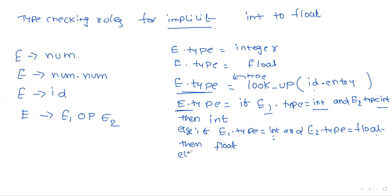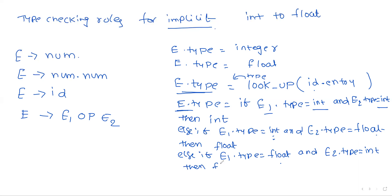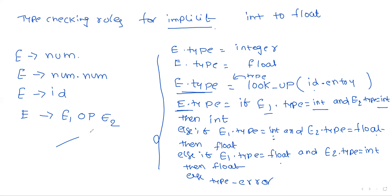Another case: if E1.type = float and E2.type = integer, the result is also float. Other than integer and float combinations, any other case is noted as a type error. These are the type checking rules for implicit conversion. Thank you.